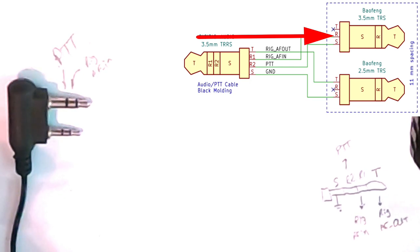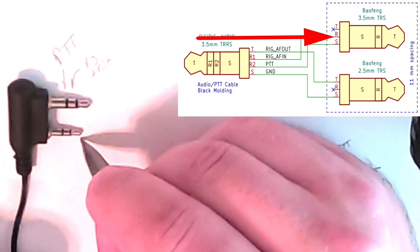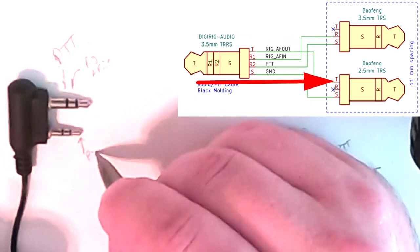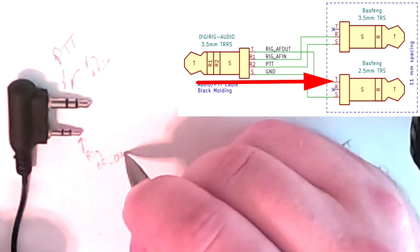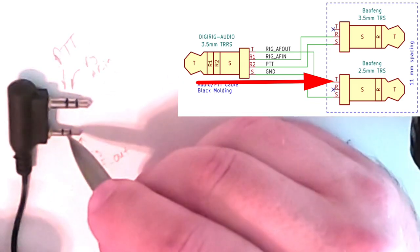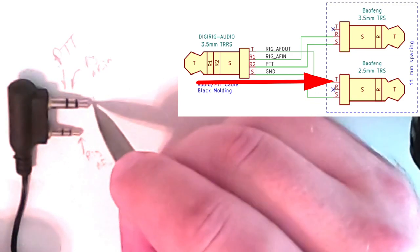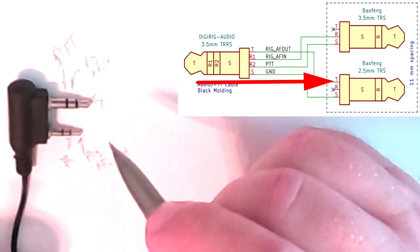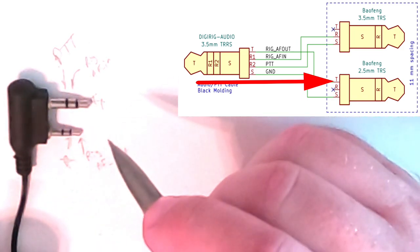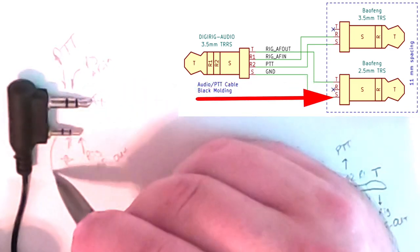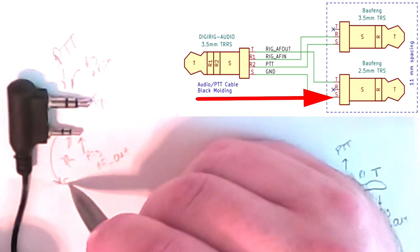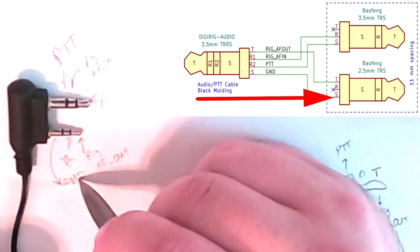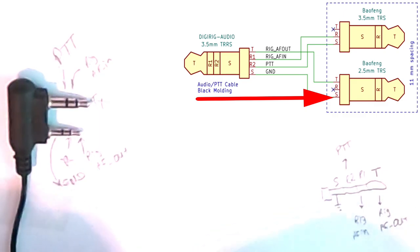So with the 2.5 millimeter, the tip is AF out. So that is rig AF out. The ring is not used on this one. The tip is ground. So we need to find what those four wires are.